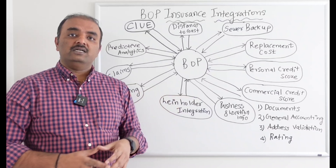Rating is the most common integration. Once all basic customer information is entered, we send the policy information to the rating system, which returns the premium with a breakdown by coverage. This is not a complete list of Business Owners Policy integrations — it is a generic overview based on my experience. I hope you like my training videos. Please subscribe to my YouTube channel. Have a great day, bye-bye.